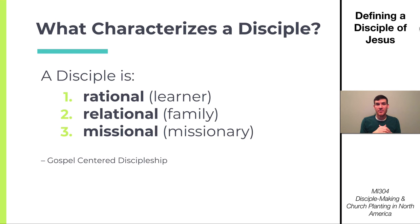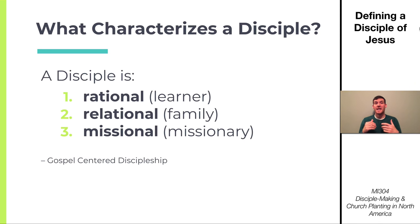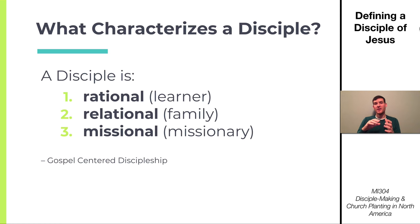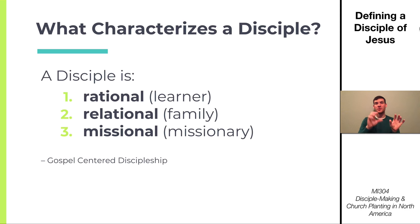What characterizes a disciple of Christ? From the book Gospel-Centered Discipleship by Jonathan Dotson, a disciple is characterized by three things: they are rational — always learning more about what it means to follow Christ; they are relational — part of a gospel family, the community of the church, investing relationally with others; and they are missional — living life as a missionary. A disciple equals a Christian, and a Christian equals a missionary. We should all be living as missionaries no matter where we are.